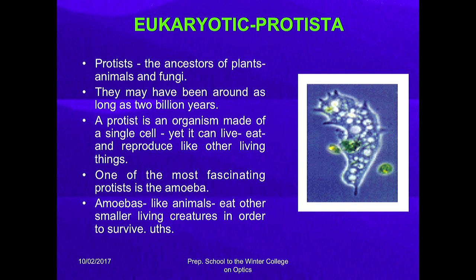Protists are another example of unicellular eukaryotes — the ancestor of plants, animals, and fungi. They may have been around as long as 2 billion years ago. A protist is an organism made of a single cell, yet it can live, eat, and reproduce like other living things. One of the most fascinating protists is the amoeba.